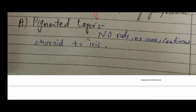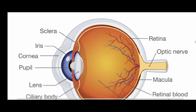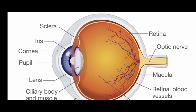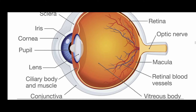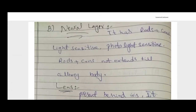The retina continues to the ora serrata where it ends. Looking at the image of the human eye structure, you can see from the outer layer: the cornea and the sclera, then the ora serrata, pupil, lens, ciliary body, ciliary muscle, conjunctiva, and vitreous body. You can also see the blood vessels in the retina, the macula, and the optic nerve. The neural layer of the retina consists of rod cells and cone cells — these are sensory cells that sense light.